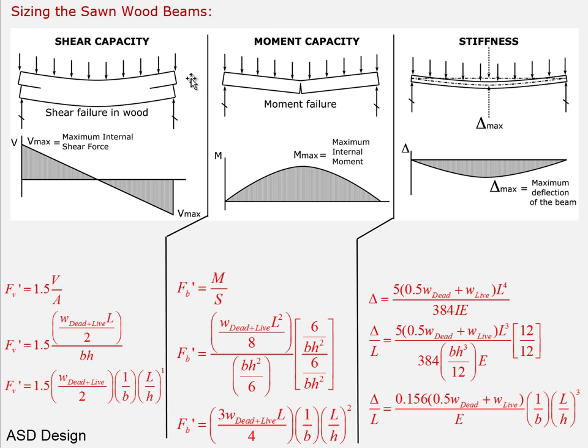A textbook example showed ten pieces of plexiglass stacked on top of each other. When unglued, they deflected a tremendous amount and were relatively weak; when glued together, they became much stronger and much stiffer. We don't want shear failure to occur, so we need to accommodate for it.